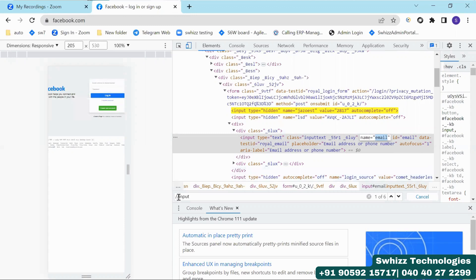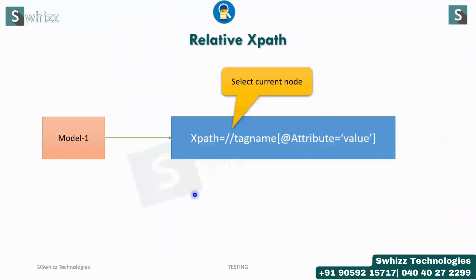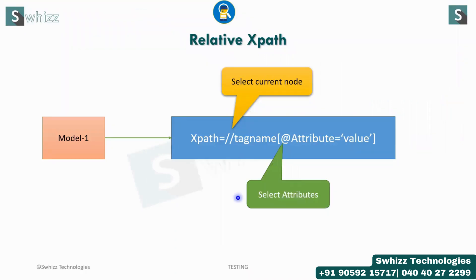Whenever you start using two forward slashes and then move to the tag name, later whatever attributes you use will definitely identify the element. To use the attributes, you have to open a bracket and inside it use the '@' symbol. What exactly does this '@' represent? This will represent the attribute — it denotes that we need to select a specific attribute.